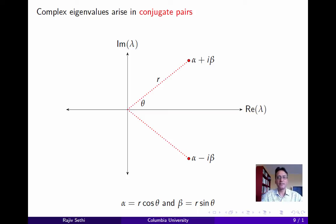It's useful to visualize these eigenvalues as points in the complex plane, especially in polar coordinates. If R is the distance of the eigenvalue from the origin and theta is the angle it makes with the real line, then alpha and beta can be expressed in terms of R and theta. The stability of a dynamical system depends crucially on whether all eigenvalues lie inside the unit disk in the complex plane — that is, whether R is strictly less than 1 for all complex conjugate pairs of eigenvalues.